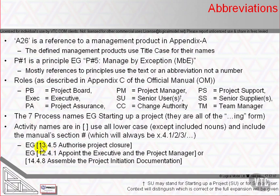Activity names are always preceded by their manual section number. For example, Authorising Project Closure is the last of the DP processes; DP is chapter 13 of the manual, and all activities are expressed in section 4 of the relevant chapter. Starting Up a Project is chapter 12, Initiating a Project is chapter 14, and Directing a Project is chapter 13. Their activities are all expressed in lower case except where title case is used for specific names — normally of management products such as the Project Initiation Document, or of management roles.